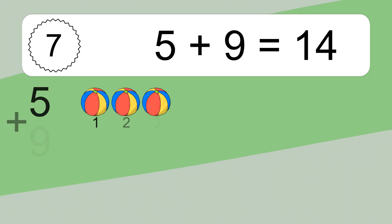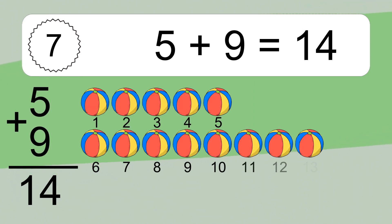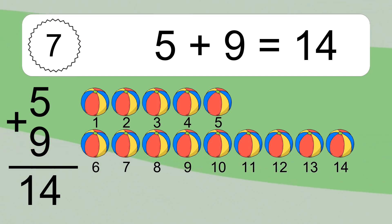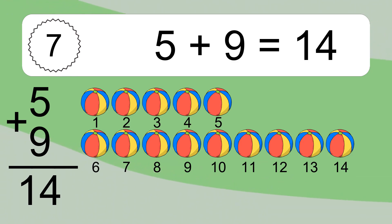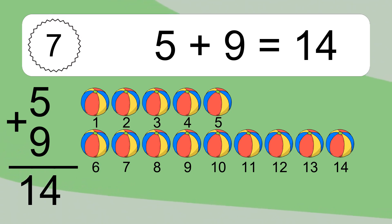5 plus 9 equals what? 5 plus 9 equals 14. Let's count it: 1, 2, 3, 4, 5, 6, 7, 8, 9, 10, 11, 12, 13, 14.